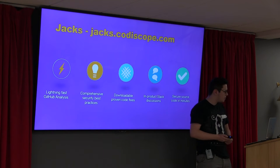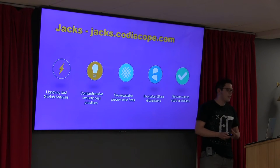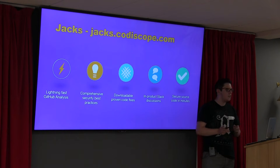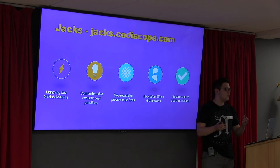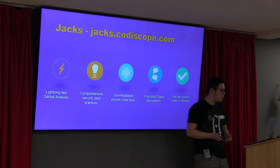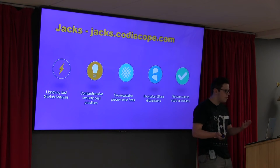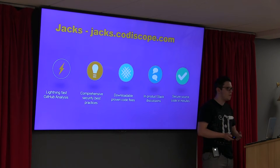It also introduces in-product Slack discussions. Straight away you can add your team into the repo you're working on. You can load up Slack and say, hey, have a look at this issue. Whenever you choose an issue, it will automatically make a new room for you to talk in. Hopefully this will help people be a bit more secure quickly, because it's lightning fast and scans repos quickly. It also offers downloadable, hopefully proven code fixes — and if they're wrong, please let us know.